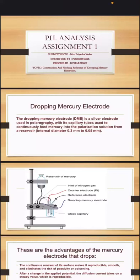Hi everyone, my name is Paramjee Singh and today we are discussing our topic of pharmaceutical analysis: construction and working of the Dropping Mercury Electrode. The dropping mercury electrode, DME, is a silver electrode used in polarography, with its capillary tube used to continuously feed mercury into the polarization solution from a reservoir.